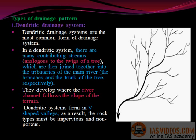Dendritic systems form in V-shaped valleys. As a result, the rock types must be impervious and non-porous.